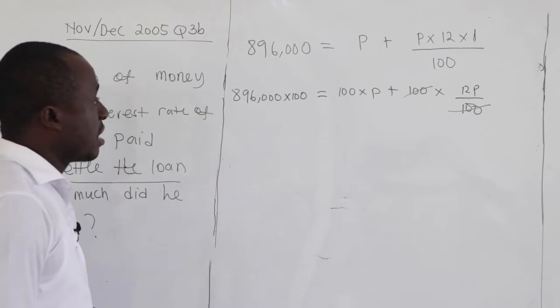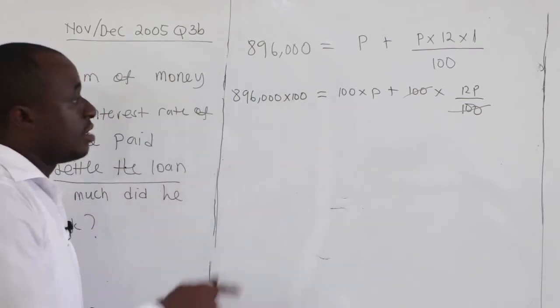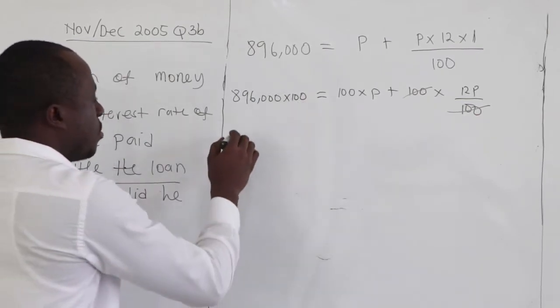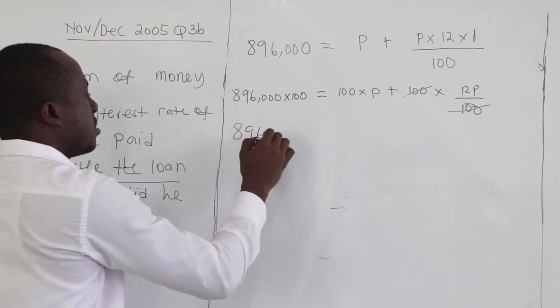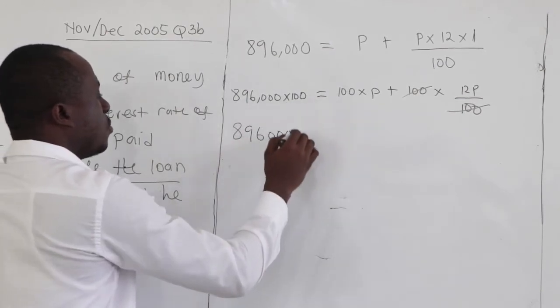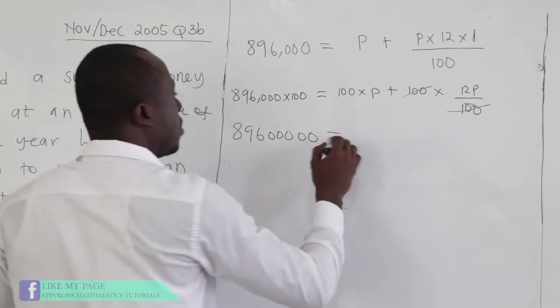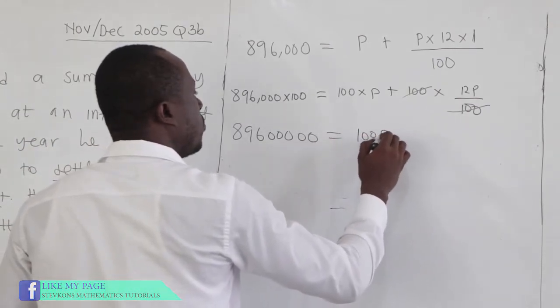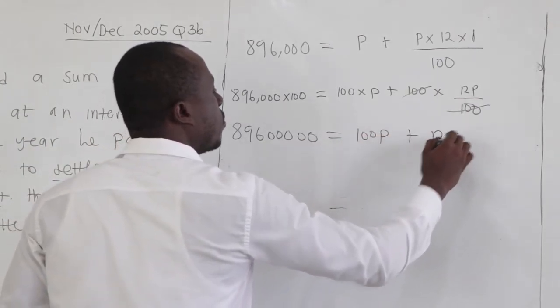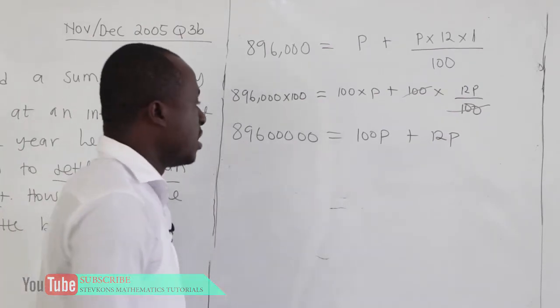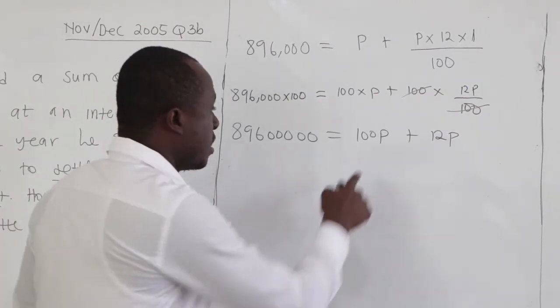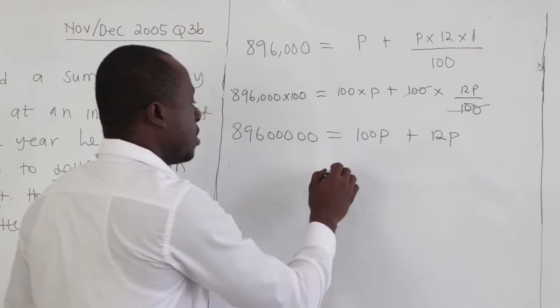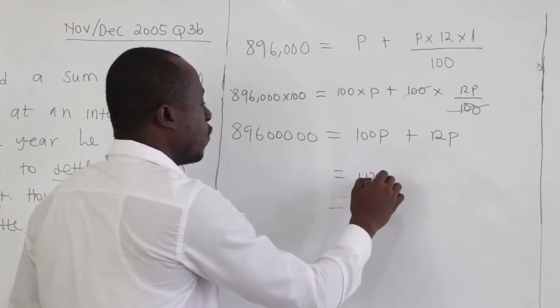Now, 896,000 times 100, you only add these two zeros to it. So you have 89,600,000. Now, this will give us 100P plus 12P. We want to find P, the principal. So clearly, 100P plus 12P, that is 112P.